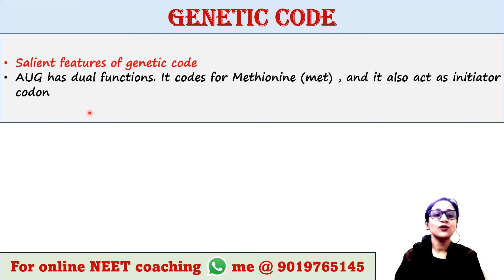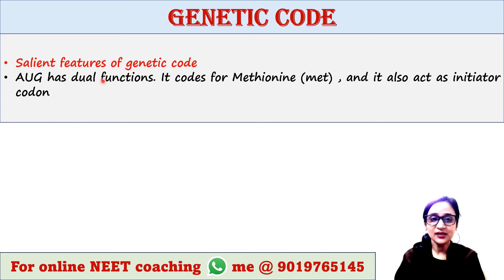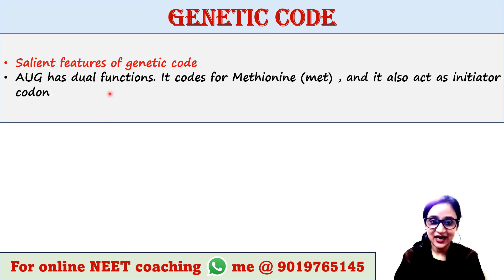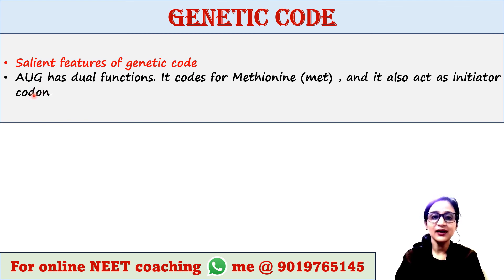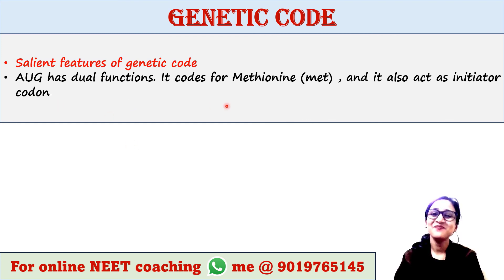AUG is a codon that has dual functions. It mainly codes for the amino acid methionine. Additionally, it also acts as the initiator codon because it initiates the process of translation. This is the start codon — it initiates protein synthesis as well as codes for the specific amino acid methionine.